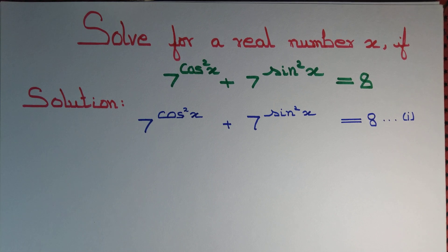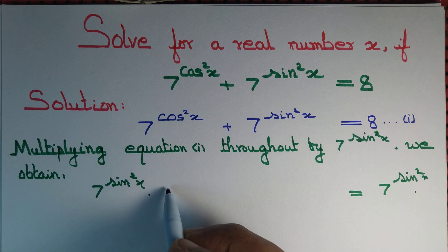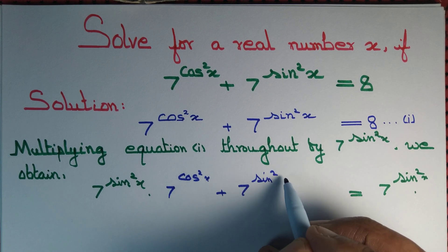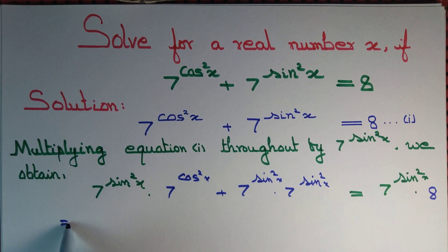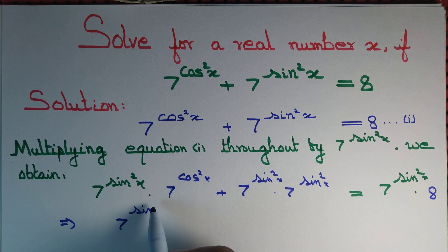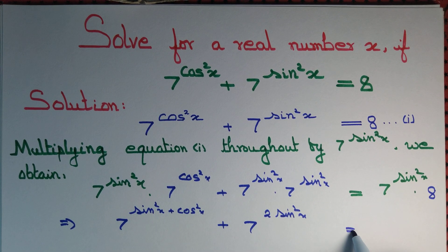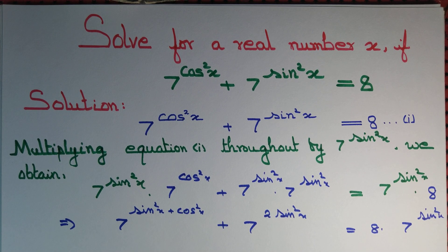Let us multiply equation 1 throughout by 7 to the power sine squared x. Each term gets multiplied: 7^(sin²x) times 7^(cos²x) plus 7^(sin²x) times 7^(sin²x) equals 8 times 7^(sin²x). Since the base is the same, powers can be added, giving 7^(sin²x + cos²x) plus 7^(2 sin²x) equals 8 times 7^(sin²x).